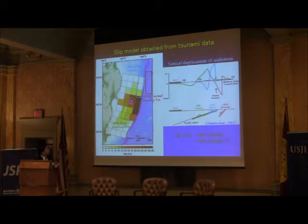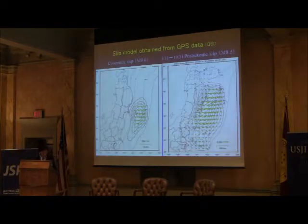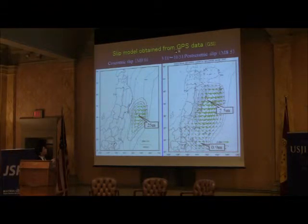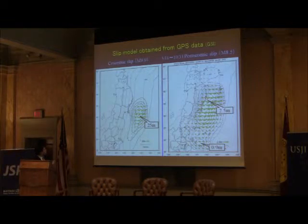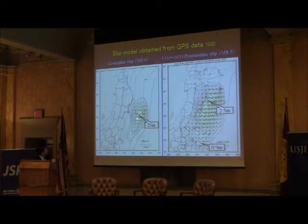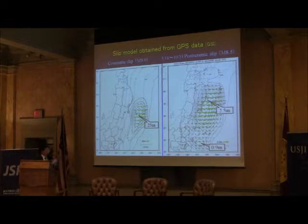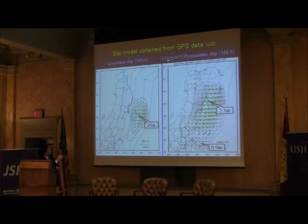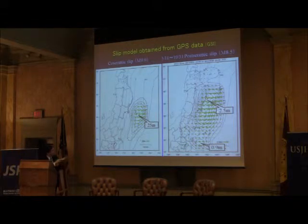Finally, a slip model using the coseismic deformation measured by GPS shows the largest offset of 25 meters near the epicenter. After the earthquake, movement continued very gradually: within seven months the afterslip showed an offset of 2.5 meters — one order of magnitude smaller — and this movement is still ongoing.